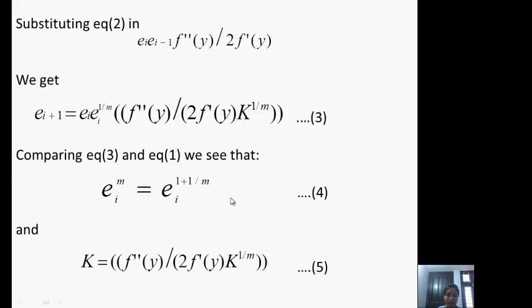By eliminating K we have e_i^m = e_i^{1 + 1/m}. Now comparing their powers: m = 1 + 1/m.